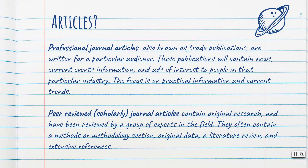For your research assignment, you'll be looking for professional journal articles, also known as trade publications. These are written for a particular audience and will contain news, current events, information, and ads of interest to people in that particular industry. The focus is on practical information and current trends. As opposed to scholarly peer-reviewed journal articles, which contain original research and have been reviewed by a group of experts in the field. They often contain a methods or methodology section, original data, a literature review, and extensive references.